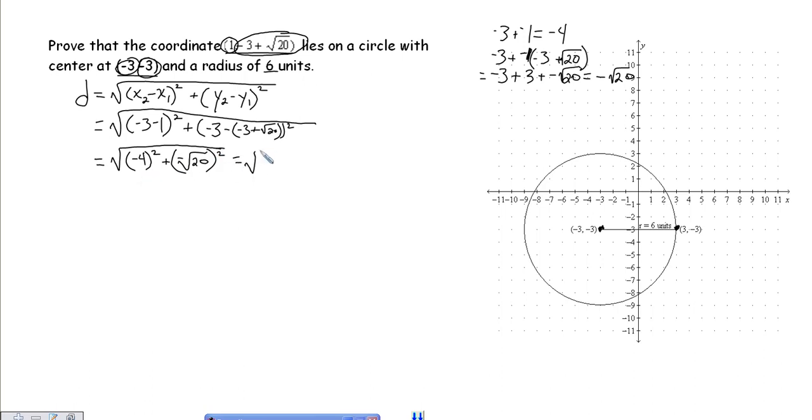Negative 4 squared is positive 16, and negative square root of 20 squared—the square root of 20 squared would be 20, and negative times a negative make that a positive—and we get the square root of 36, and it does indeed equal 6 units.